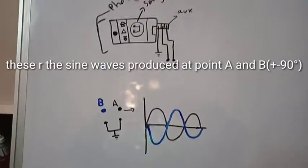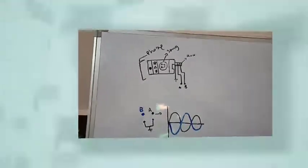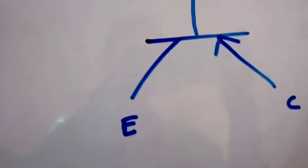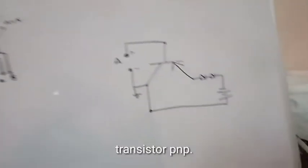At point A and B, there will be two sine waves produced. Now I will be explaining how this circuit works.